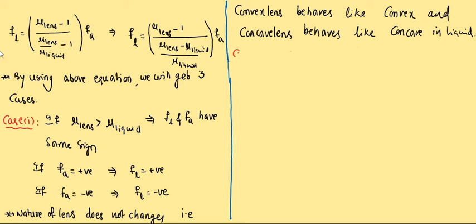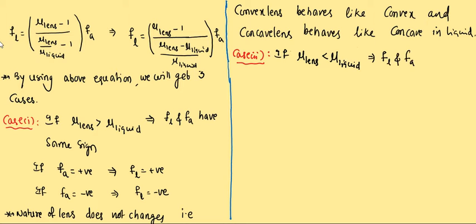Case 2: if the refractive index of the lens is less than the refractive index of the liquid, then FL and FA have opposite signs. If n_lens < n_liquid, then (n_lens - n_liquid) is negative. With FA positive, this negative term makes FL negative.